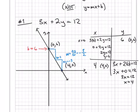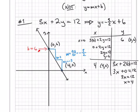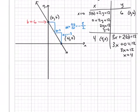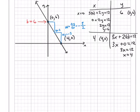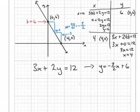That tells me this line could also be graphed by the equation y equals mx plus b — y equals negative 3 over 2 times x plus 6. Because when I graphed the original equation and looked at my graph, I had a y-intercept of 6 and a slope of negative 3 over 2. So the conjecture is that 3x plus 2y equals 12 makes the same line as y equals negative 3 over 2 times x plus 6.